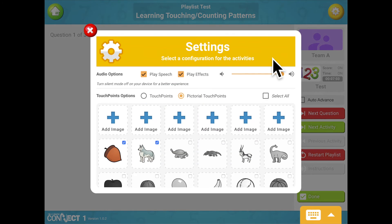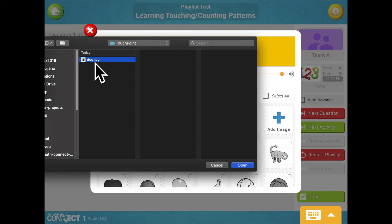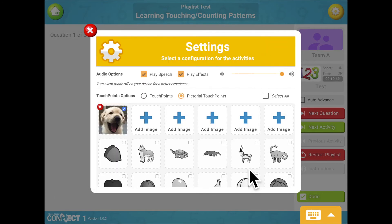Touch Math Connect 1 has over 120 pictorial touch point options built in, but you can further personalize the experience by uploading your own images. Click the Add Image and select Picture File from your computer or device.